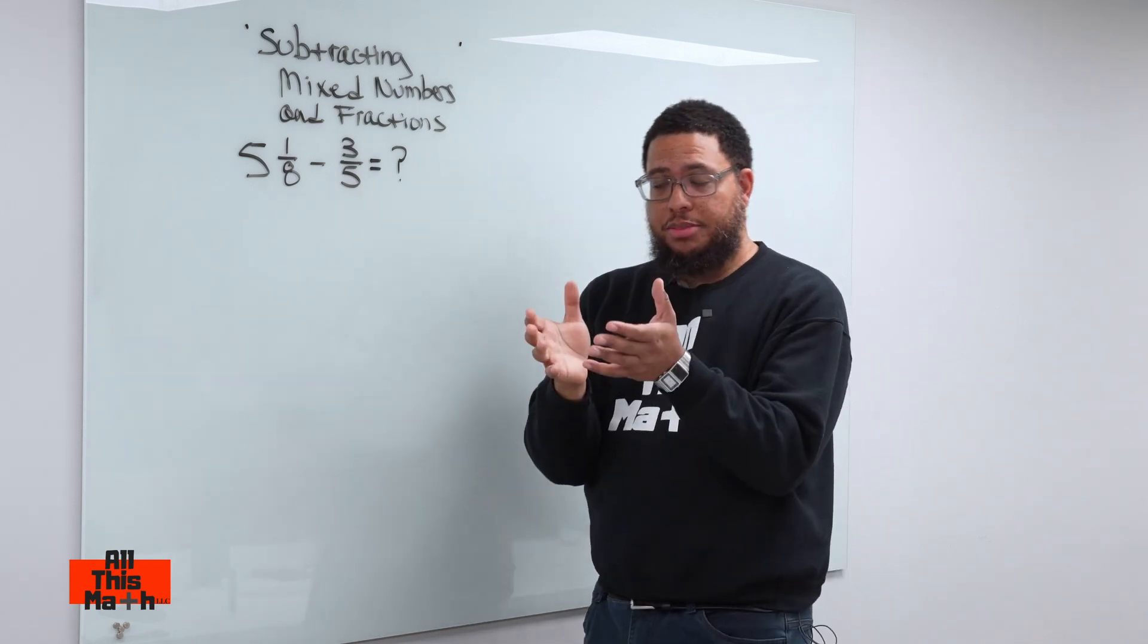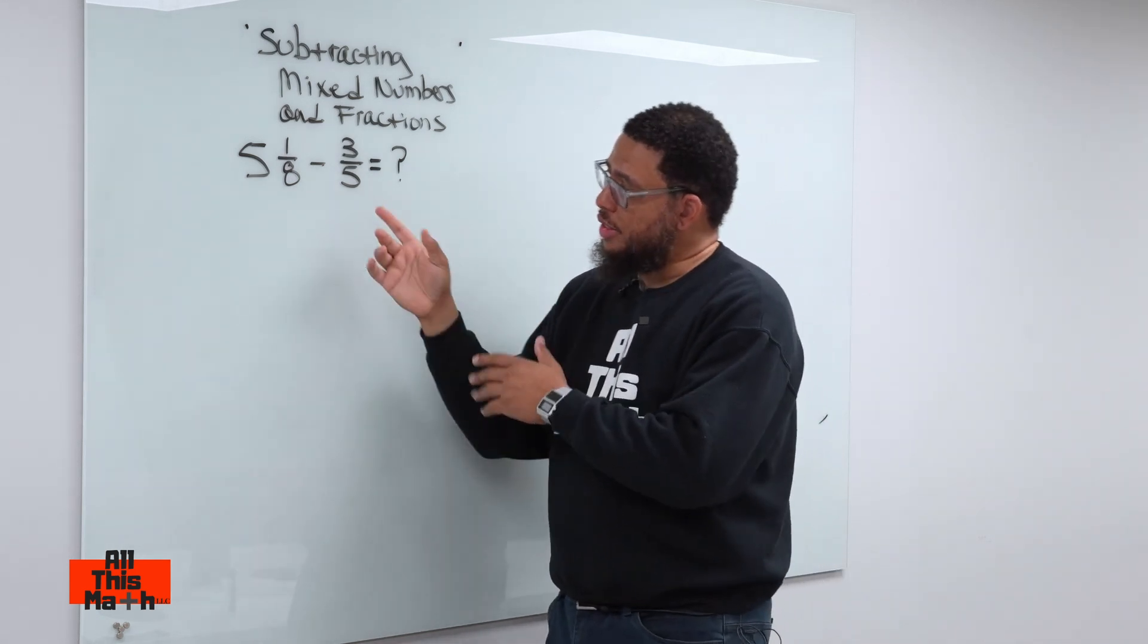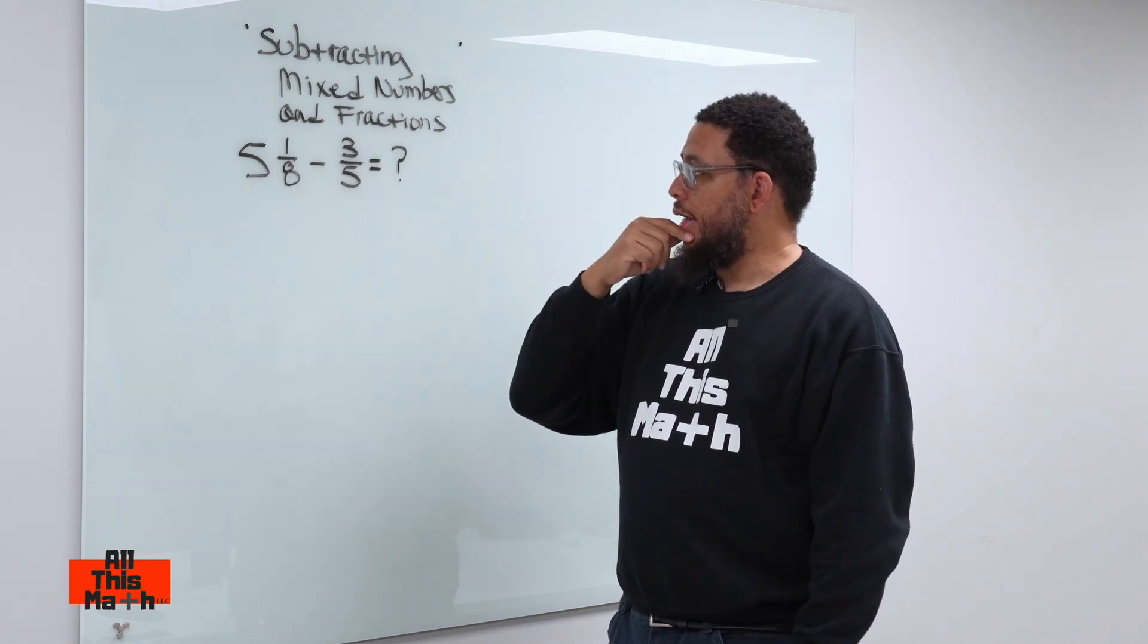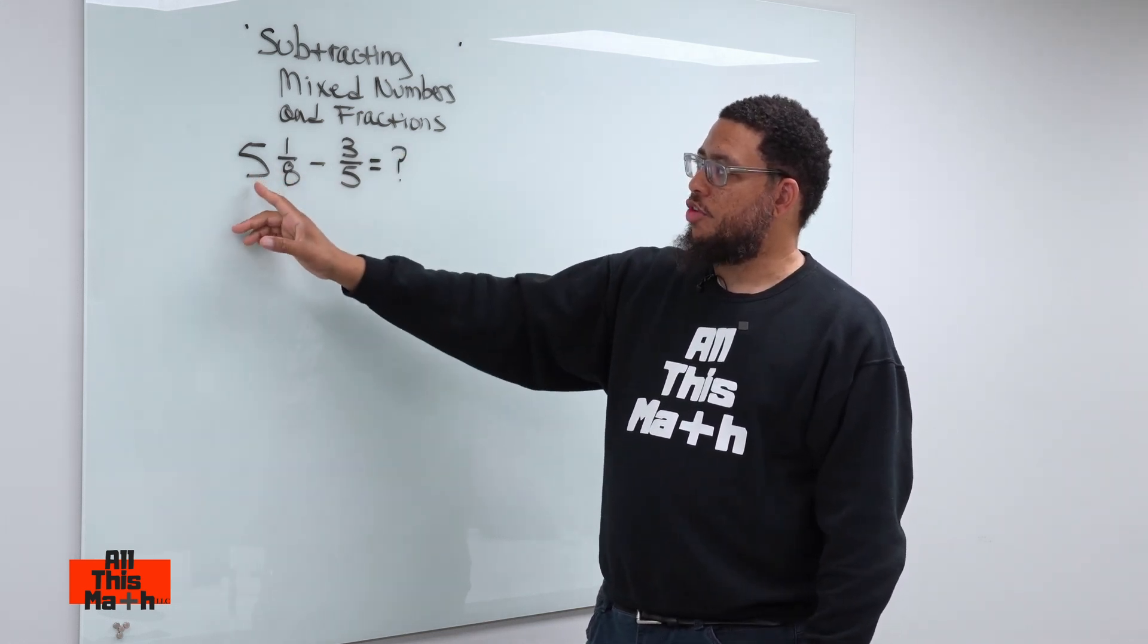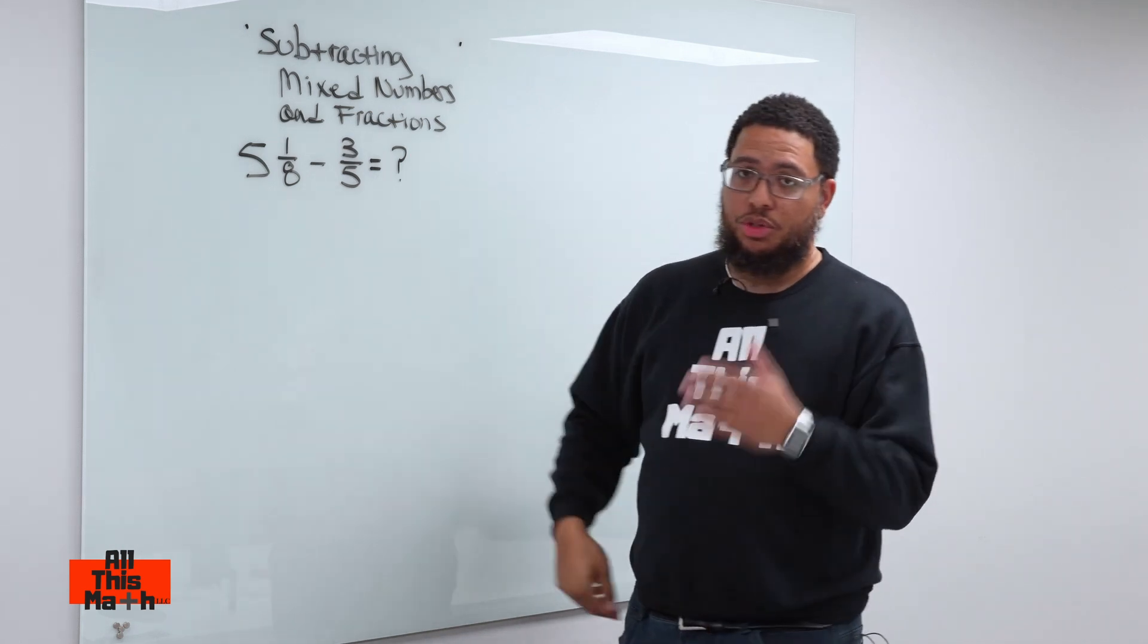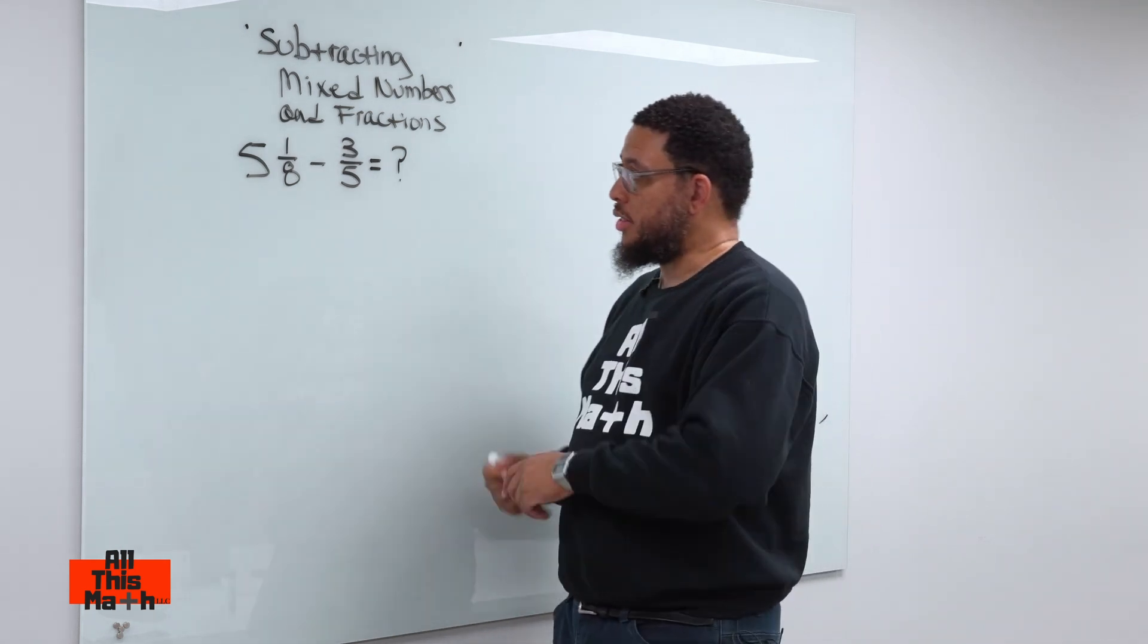So, what does 3/5 mean? It means you have an object of some sort broken up into five equal pieces, and then we're focused on three of those pieces. Now, one way to do this problem would be to just convert this mixed number into an improper fraction and then subtract, but we're not going to do it like that, because I want to show you the skill of how to subtract fractions from mixed numbers.